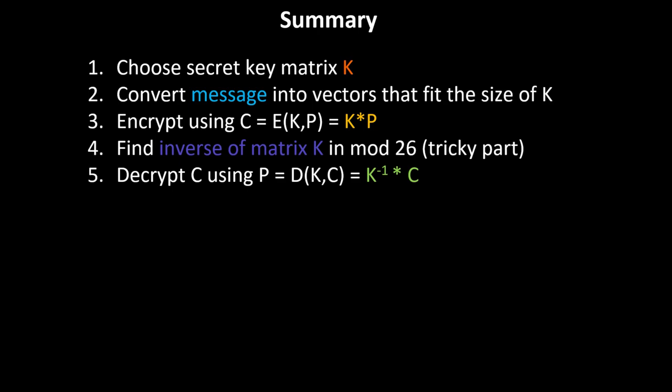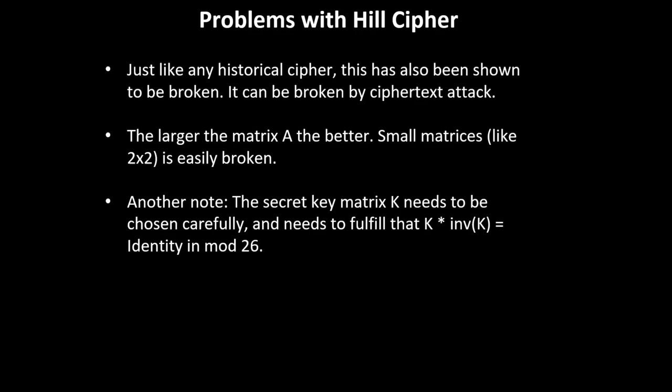Hopefully that example was clear. To summarize: we first choose a secret key matrix K. We convert our message into vectors that fit the size of K to do the matrix multiplication. We encrypt using the simple formula K times that vector. We find the inverse of that matrix K in modulus 26, which is usually the tricky part. Then we decrypt using the formula inverse of K times C.